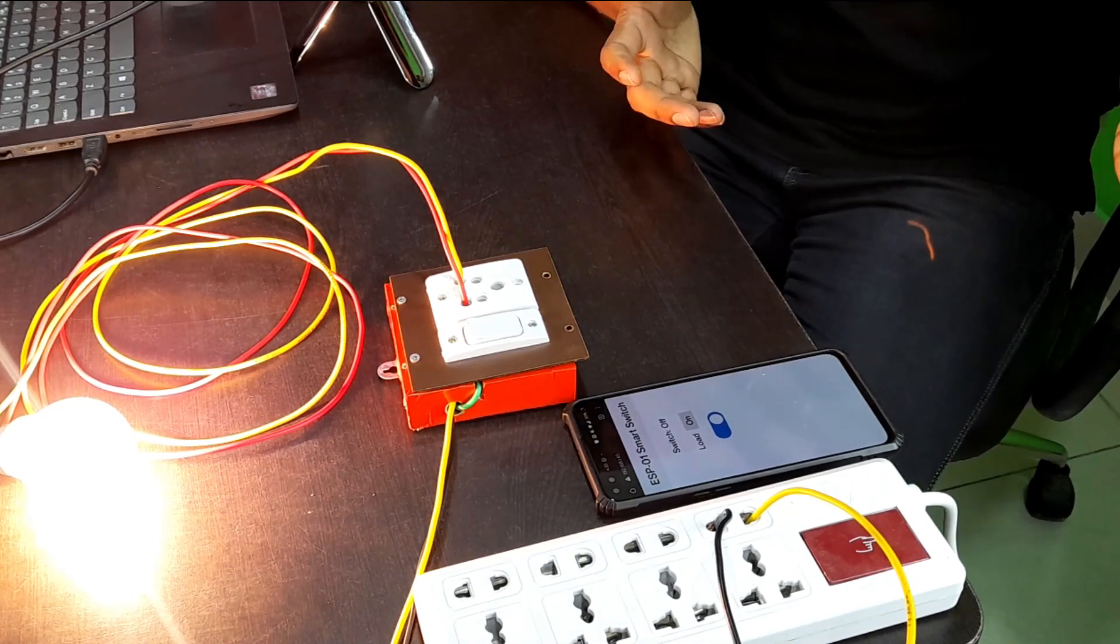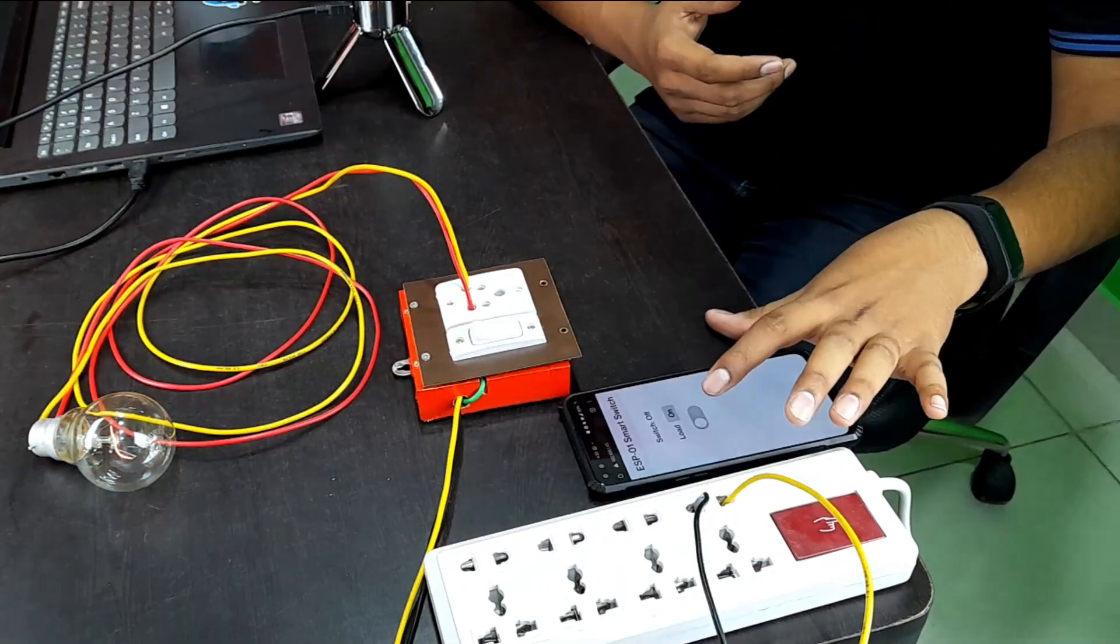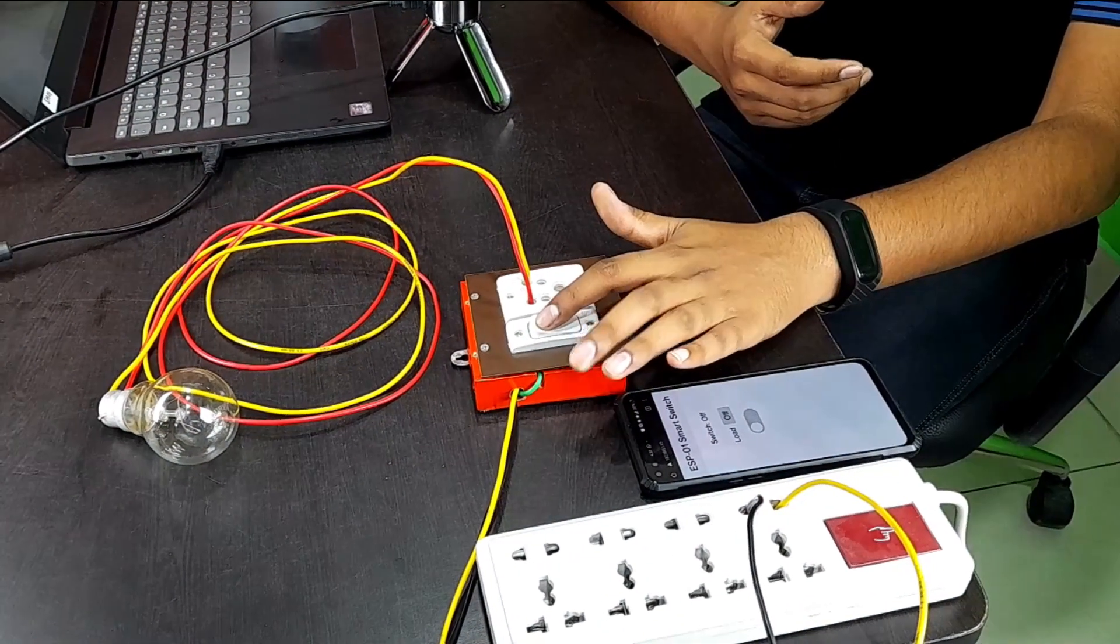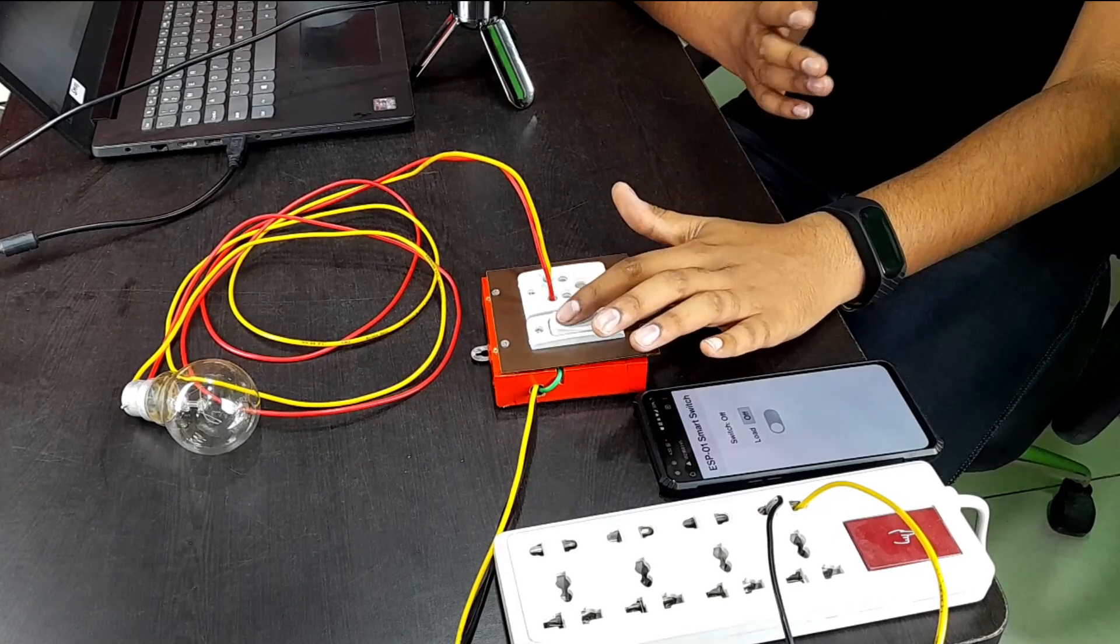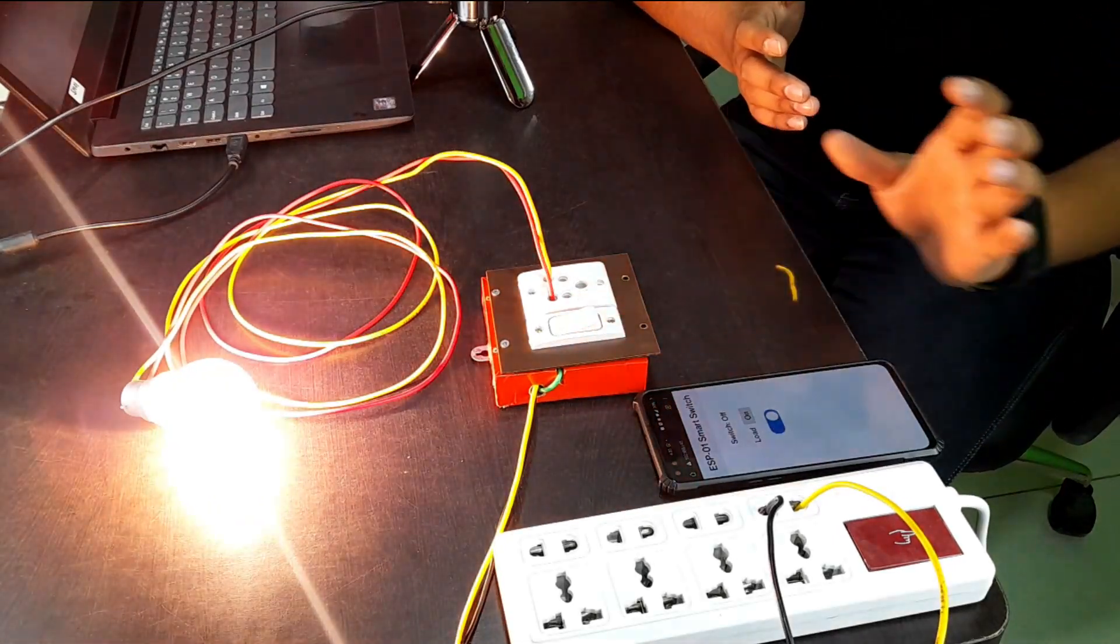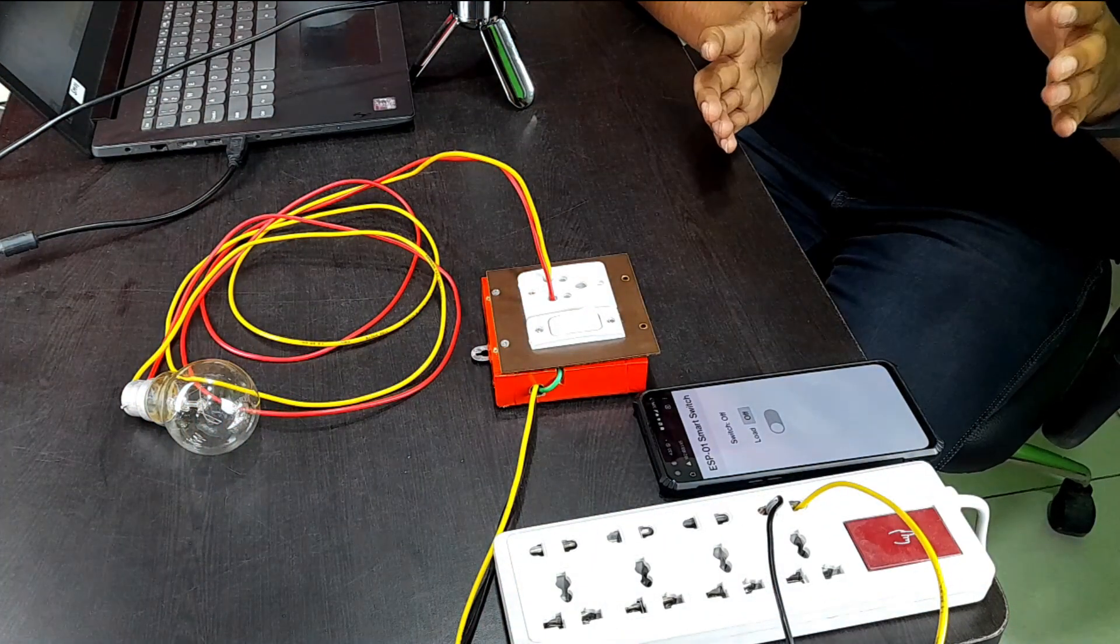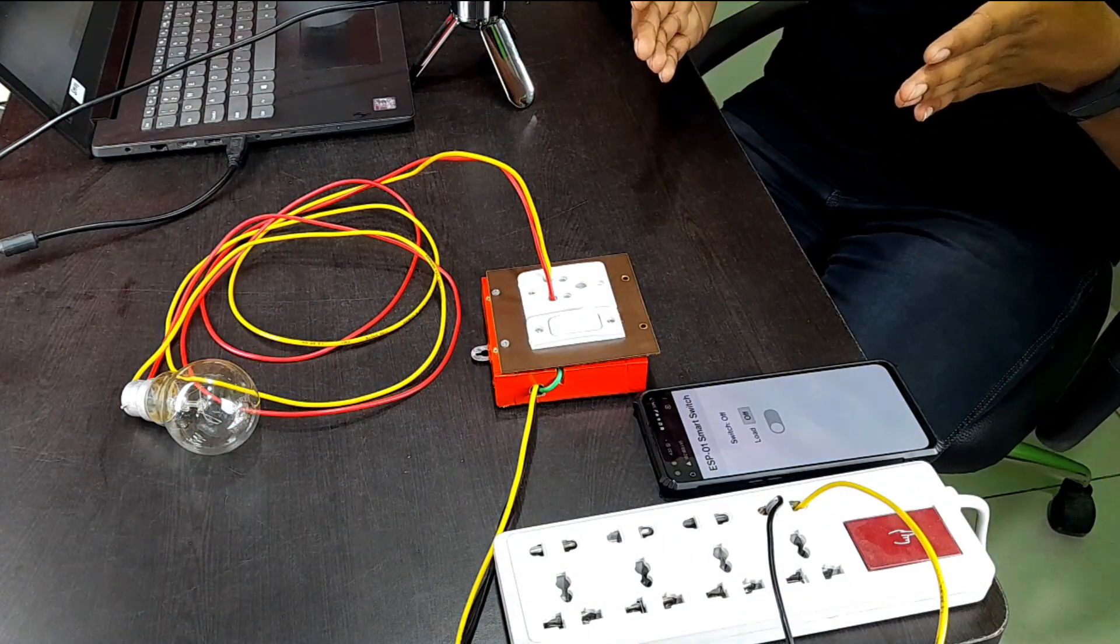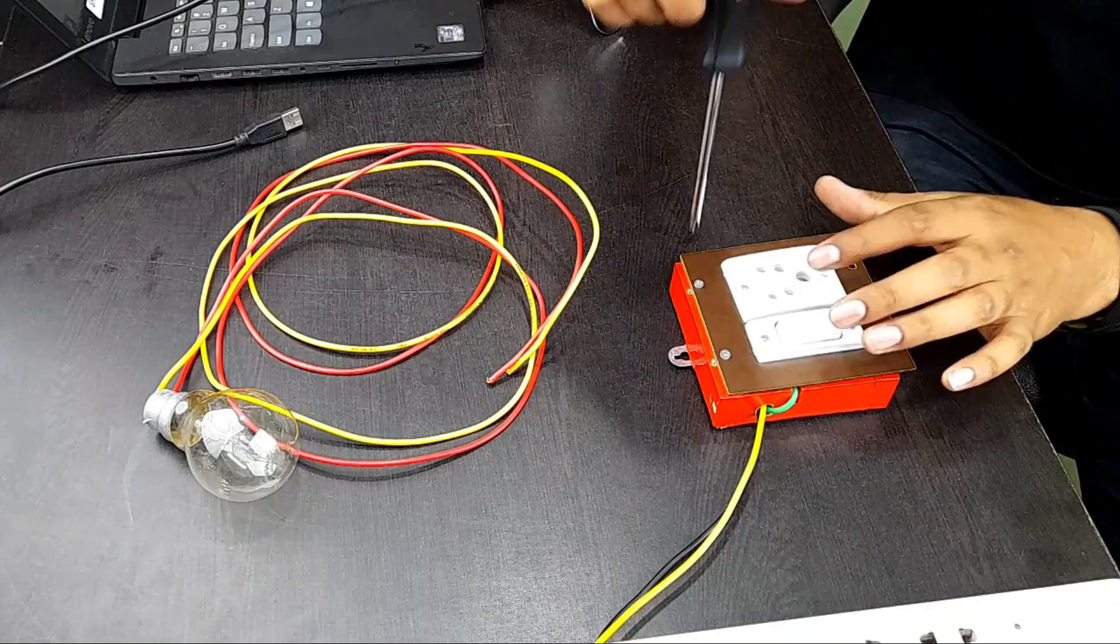To turn it off, you can either turn it off from the physical switch or, when you're not able to access the switch, you can simply toggle it from the web app and it will turn right off, irrespective of the position of the switch on the switchboard.